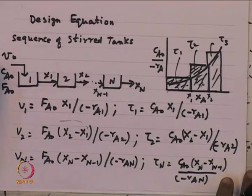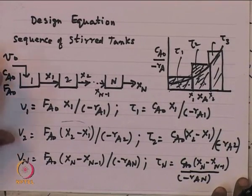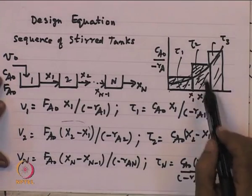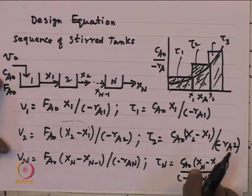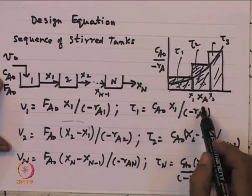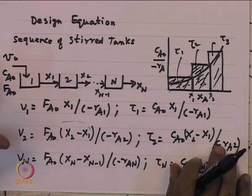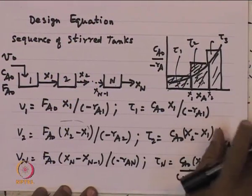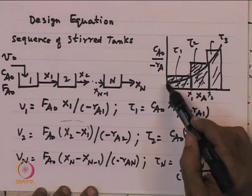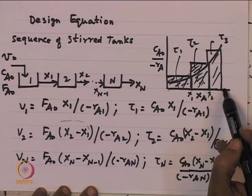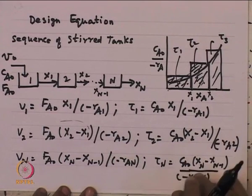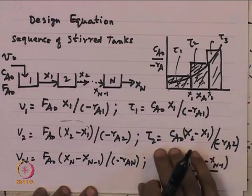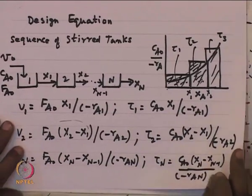What we are saying is that for a sequence of stirred tanks, you construct these rectangles and the area of those rectangles gives the residence time, plotted in the form of C_A0/(-r_A) versus X. The reaction kinetics may not be easy to determine directly, but C_A0/(-r_A) versus X data is relatively easy to obtain. Therefore, it is relatively easy to determine what reaction time is required for a given extent of reaction, and you can use a number of stirred tanks or a PFR to drive the reaction to the desired endpoint.